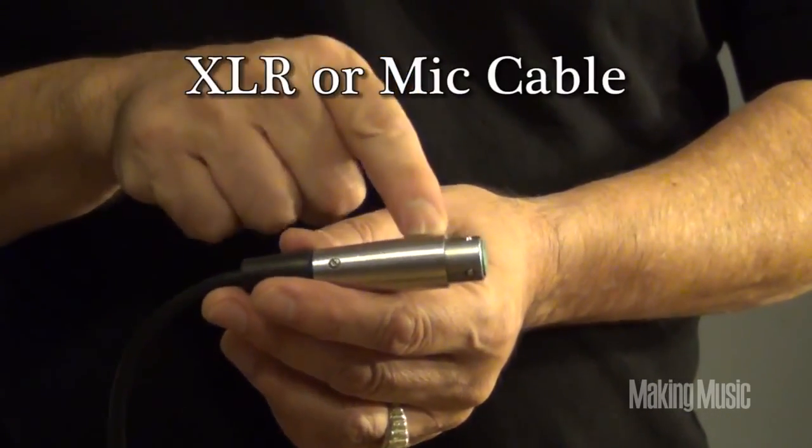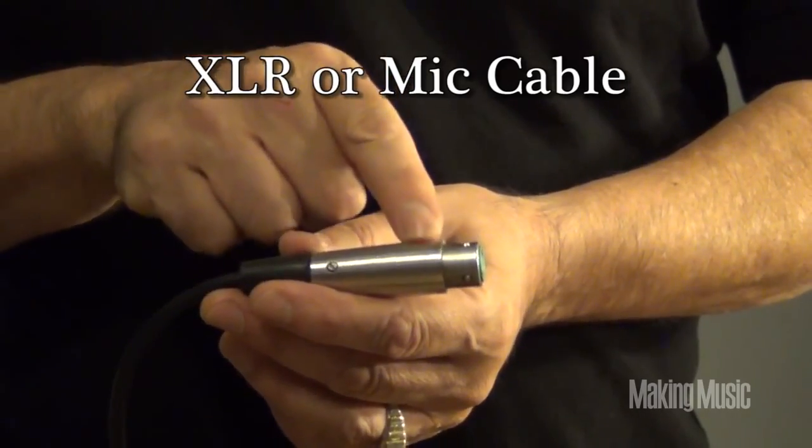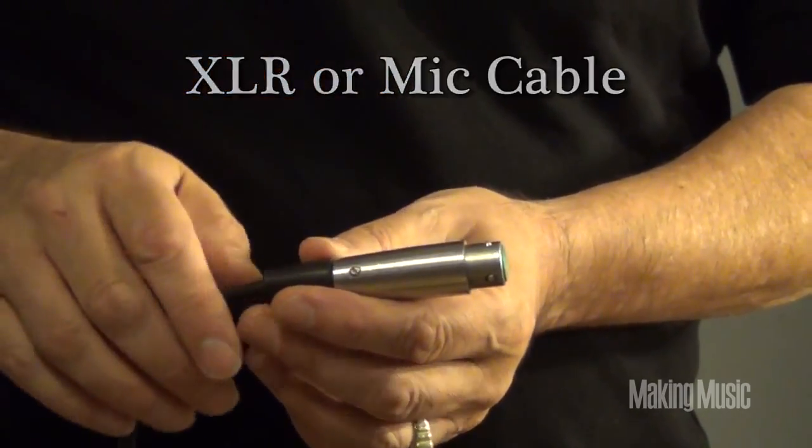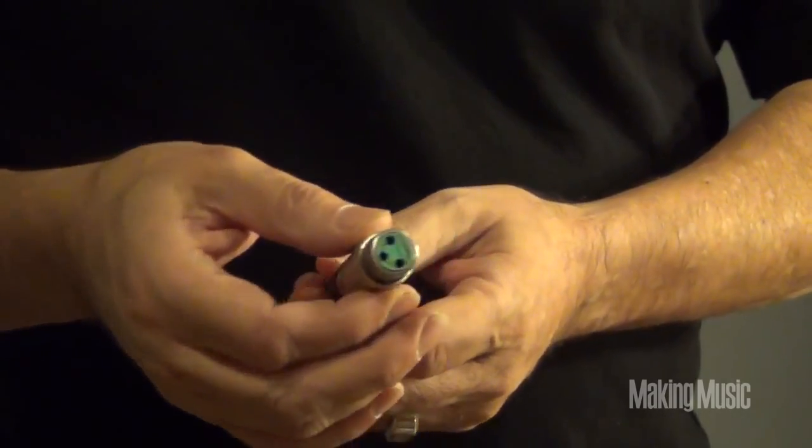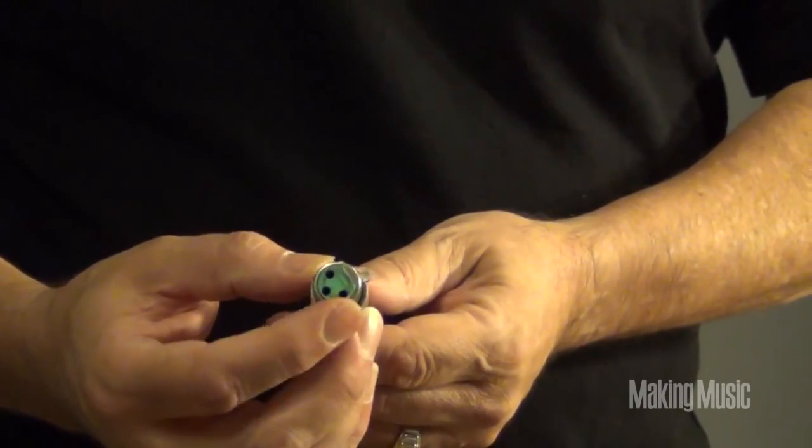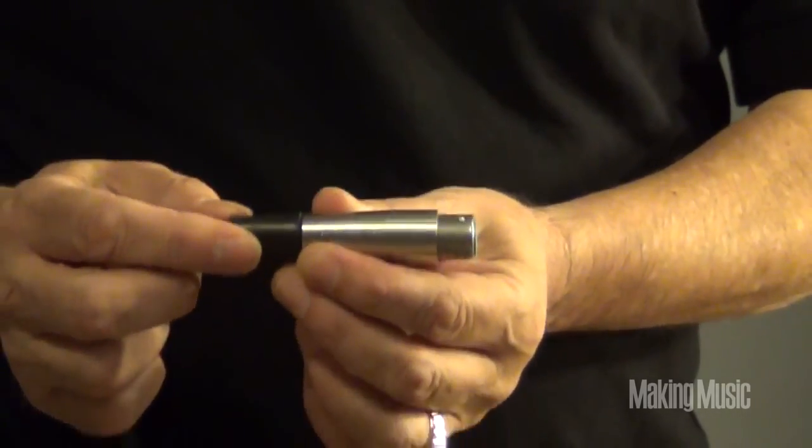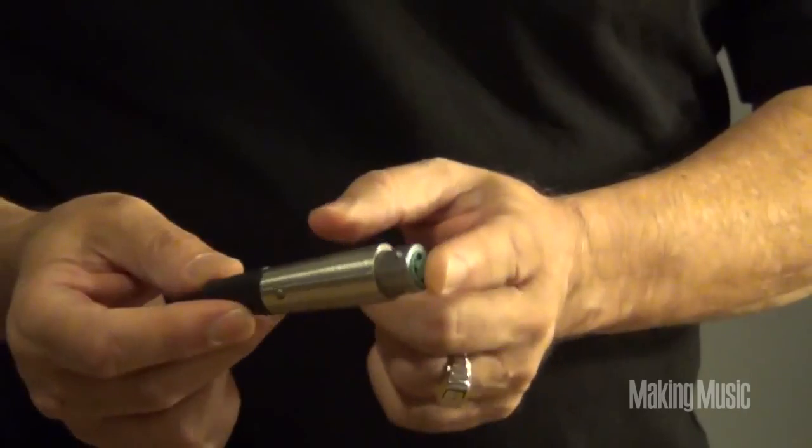This is a standard mic cable. This is the end that actually goes in the mic. Sometimes we call these XLR cables. And you'll notice this is a female jack. Three little holes for tip, ring, and a sleeve connection. This is the female version of an XLR mic cable. Mic goes in here.